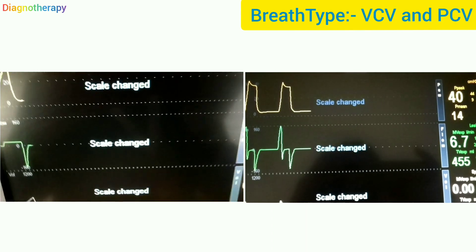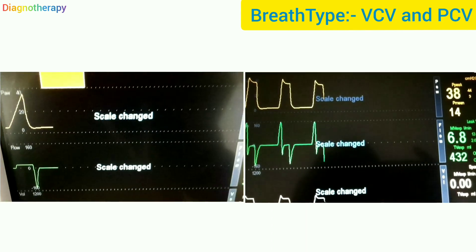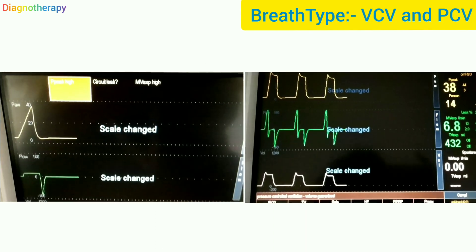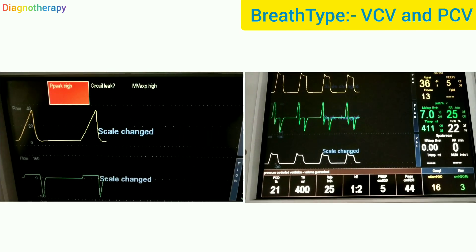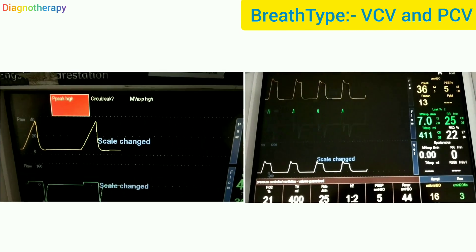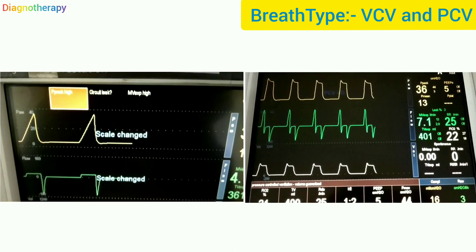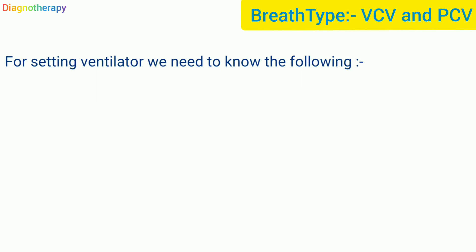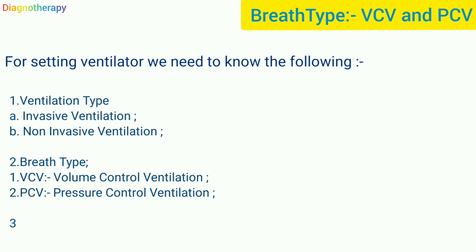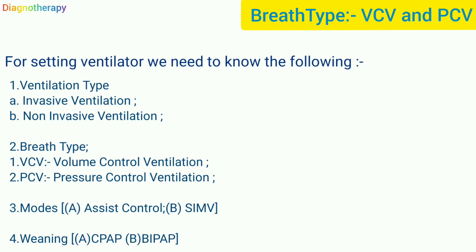Let's have a look at the ventilator screens. On the left it is volume control ventilation and on the right it is pressure control ventilation. For setting a ventilator we need to know the following: first the ventilation type, second the breath type.